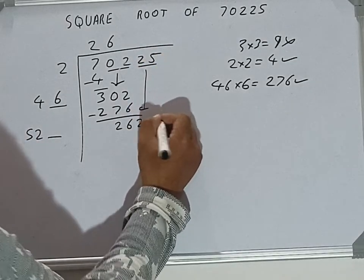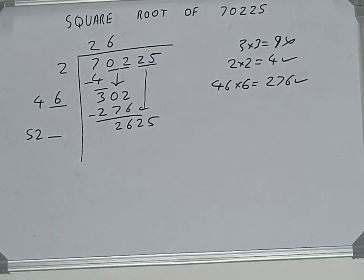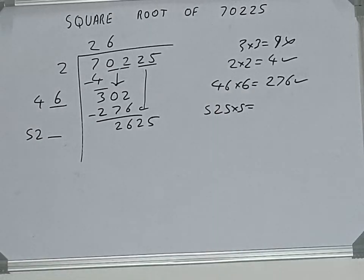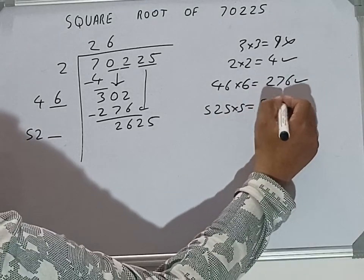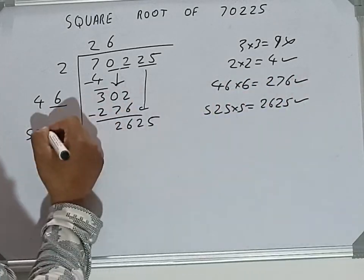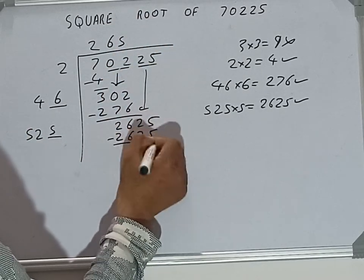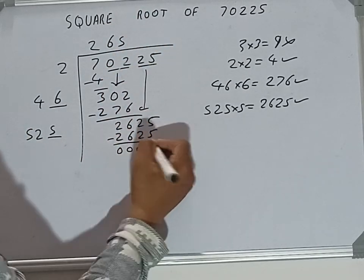Now we can try five times, that is five to five into five we can try, and it will give us 2625, which is good to take. So five here and five here: 2625.